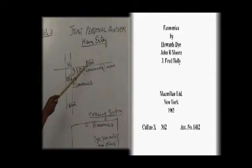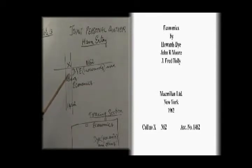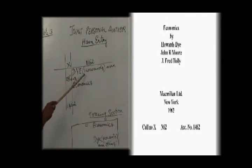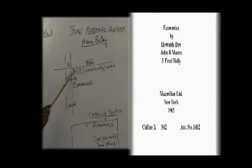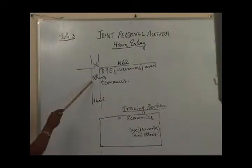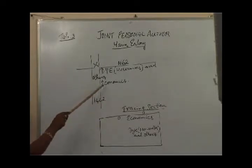For the above title page, the class number is written on the first vertical line as X, and by leaving a few spaces the book number is written as N62. There are three authors given; the principal author is Howards Die, so 'Die' is the entry element, written in capital letters starting from the second vertical. The rest of the names are within parenthesis, and we have used the word 'and others', beginning from the second vertical with continuation to the first vertical.